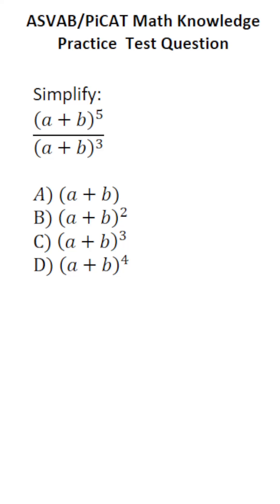That said, if it's test day and you're a little unsure as to how to proceed, you can do this one somewhat the long way. (a + b) to the fifth means you take (a + b) and you multiply it by itself five times, of course.